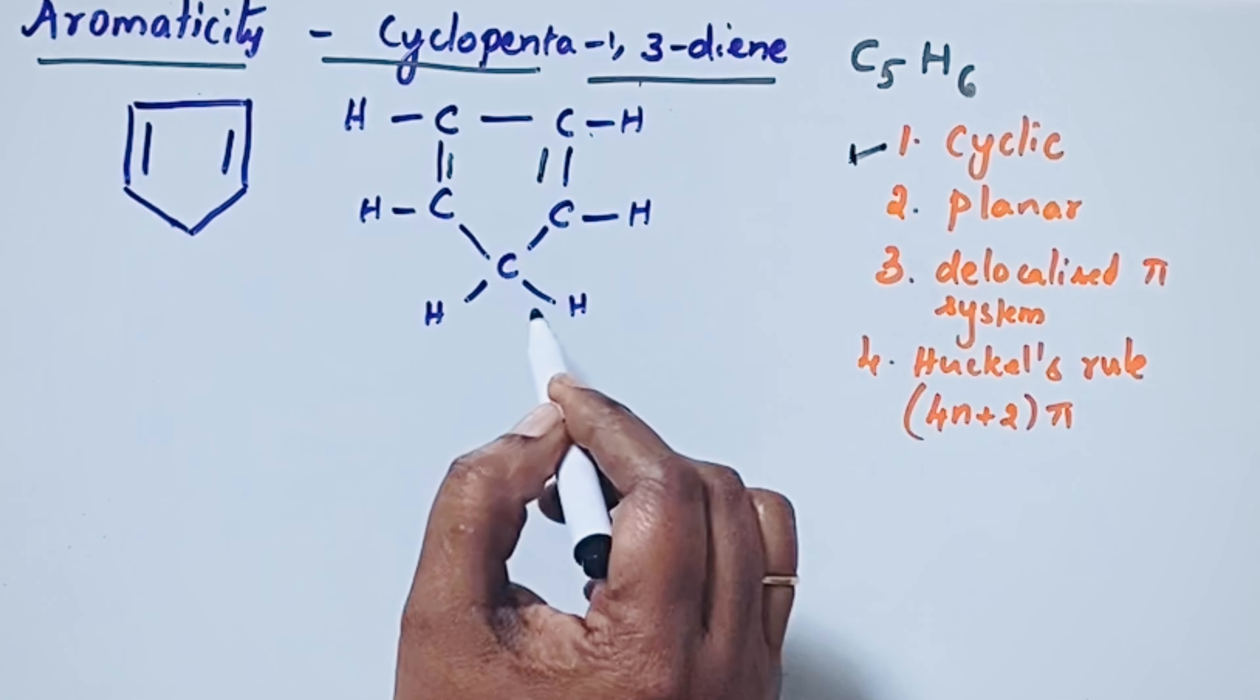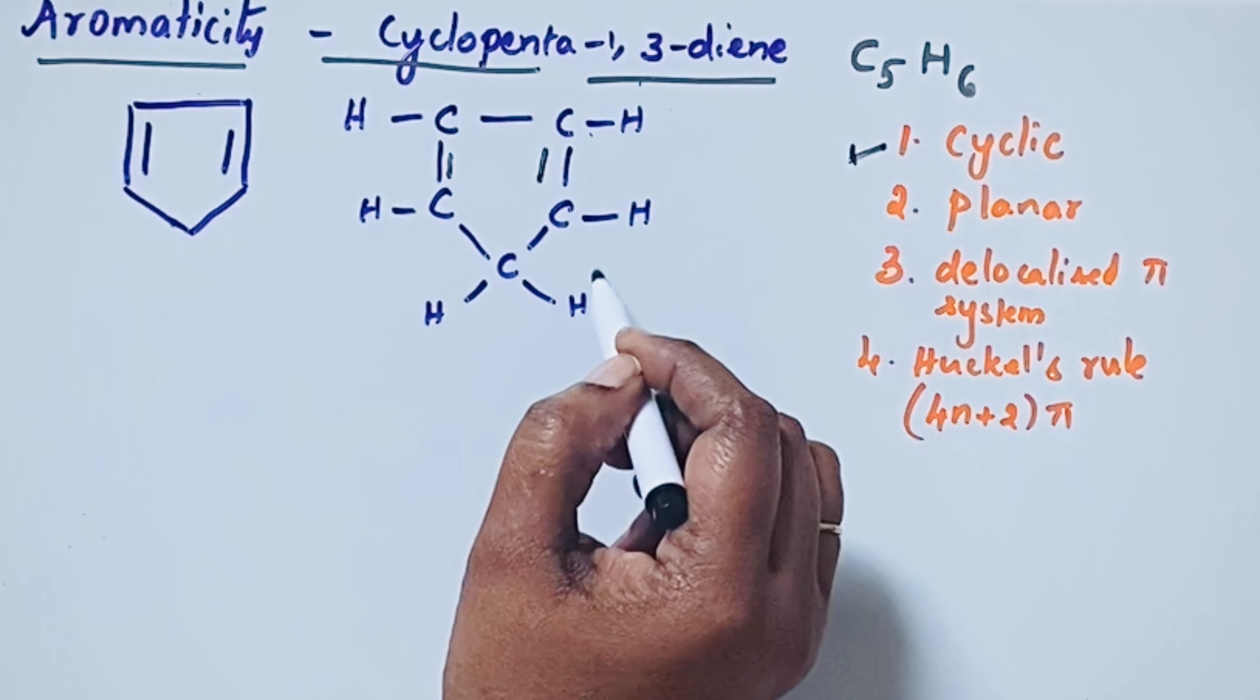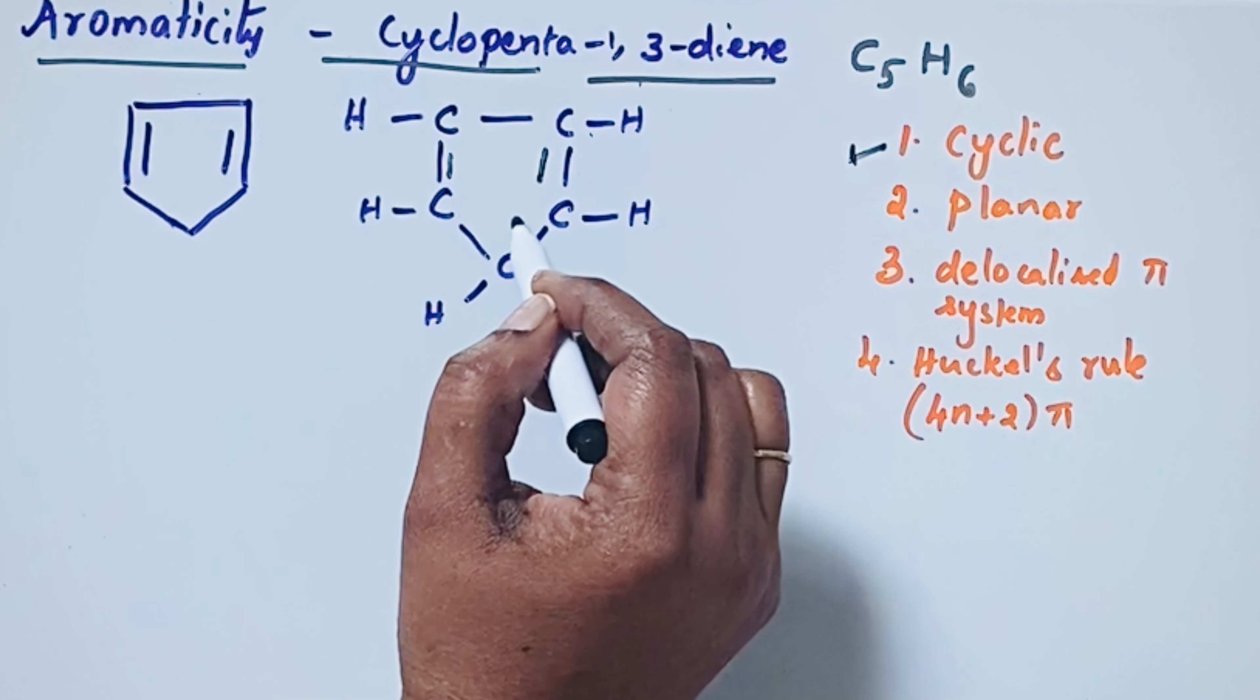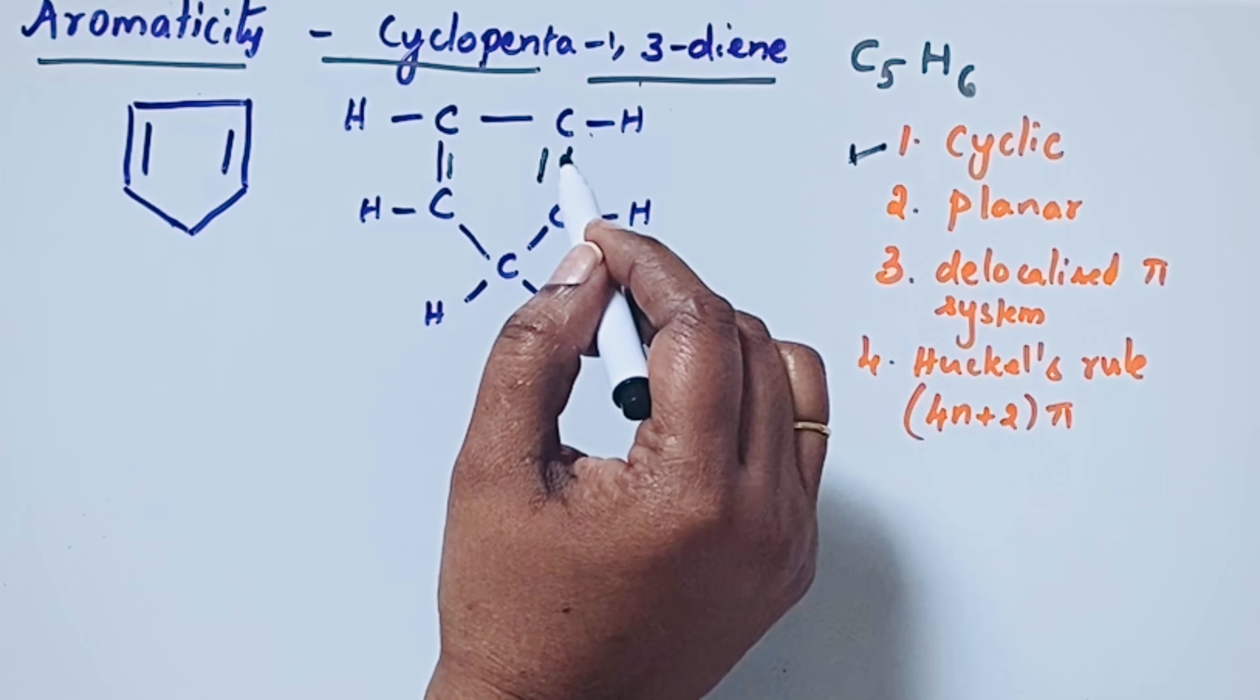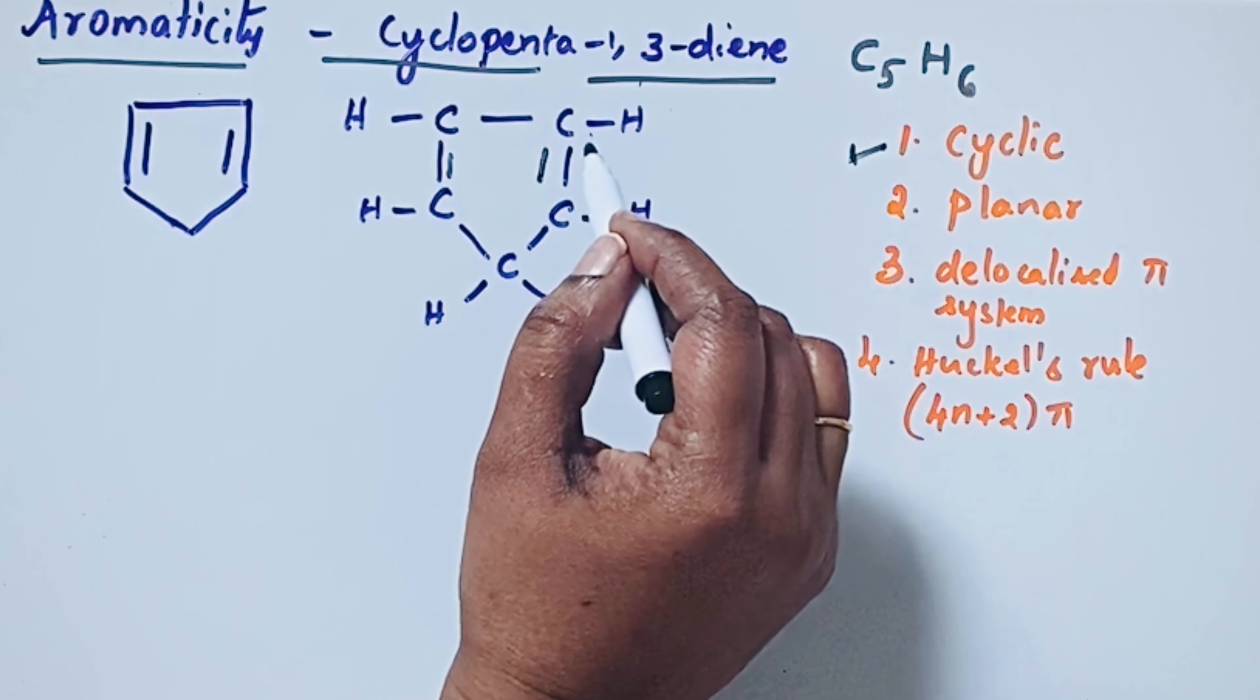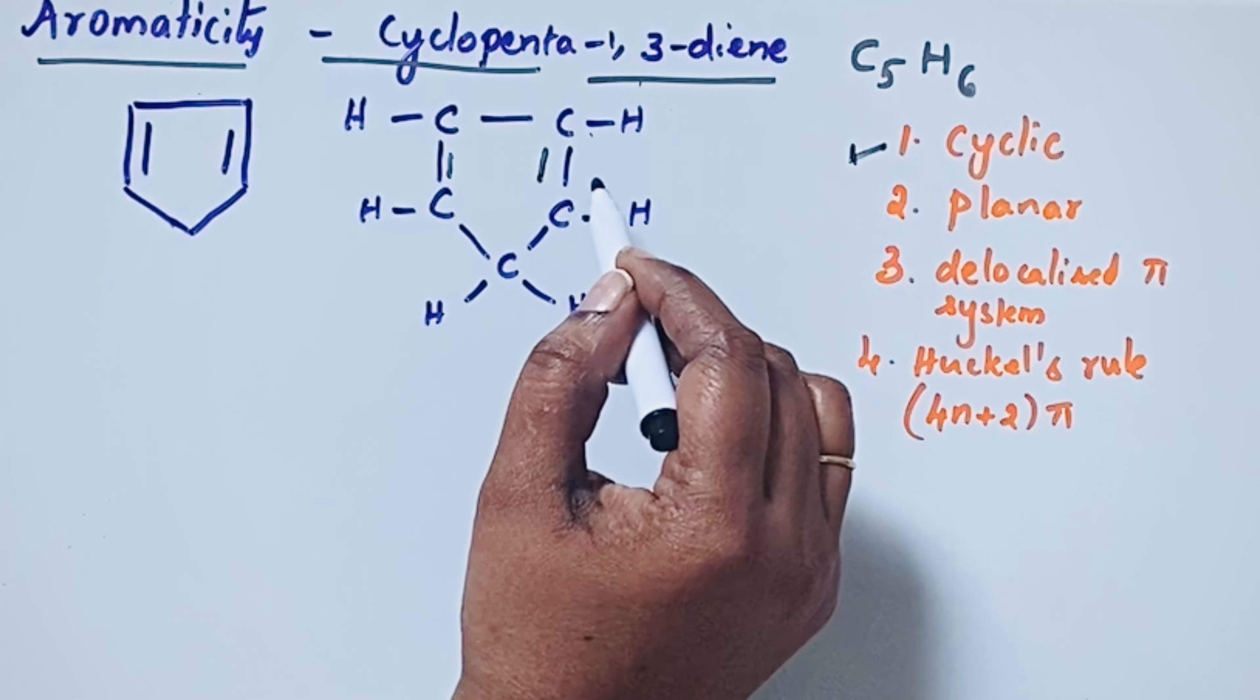Whether it is planar or not - how do you find out whether a compound is planar or not? If a cyclic compound has all carbons with sp2 hybridization, then we call it a planar molecule.